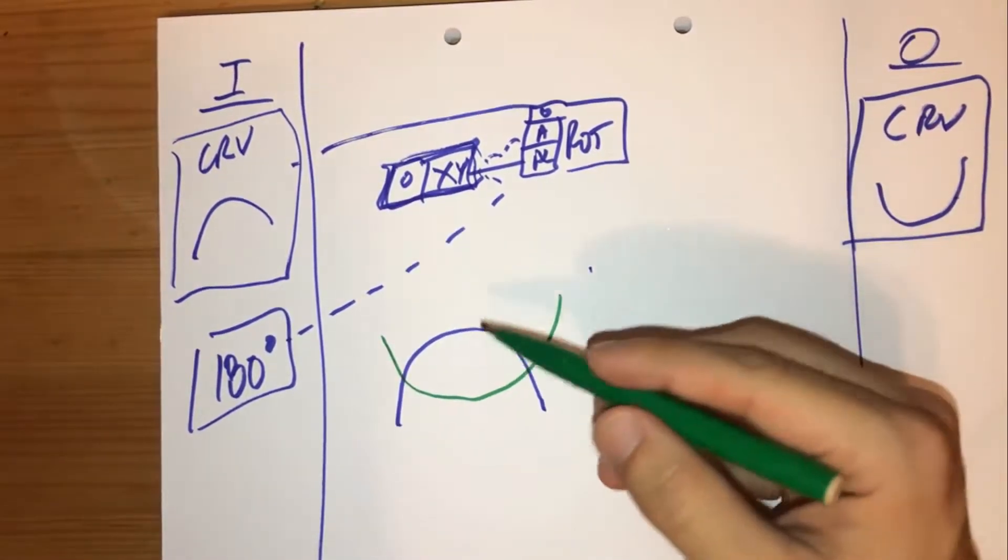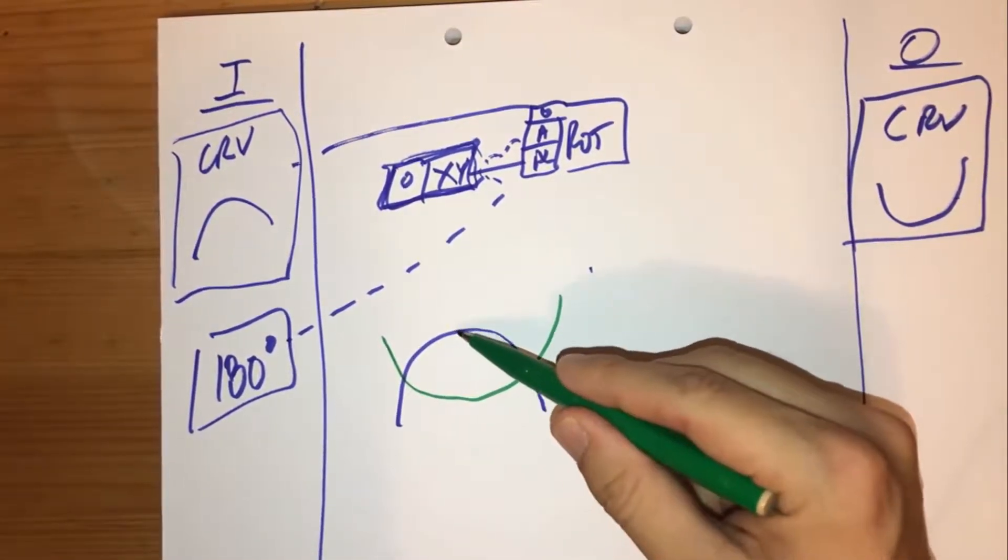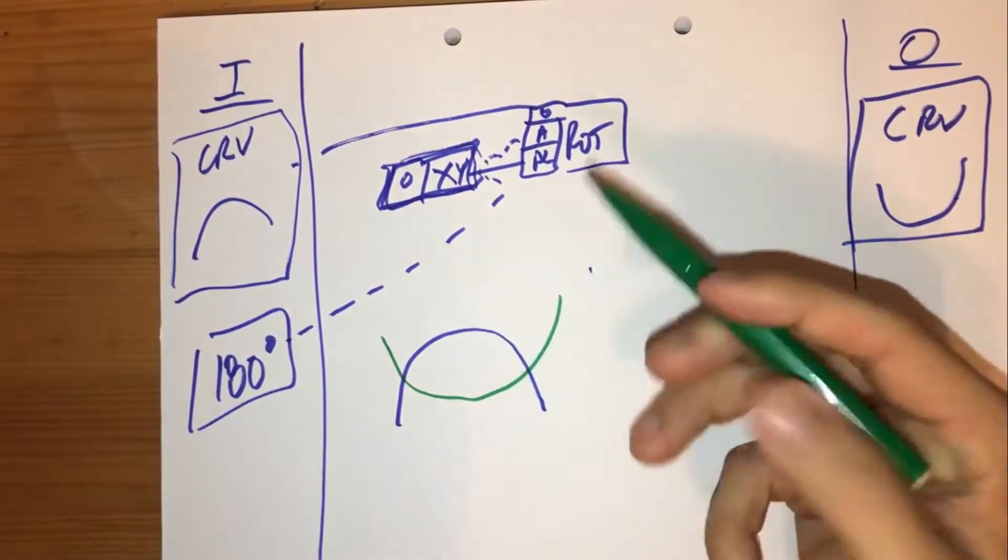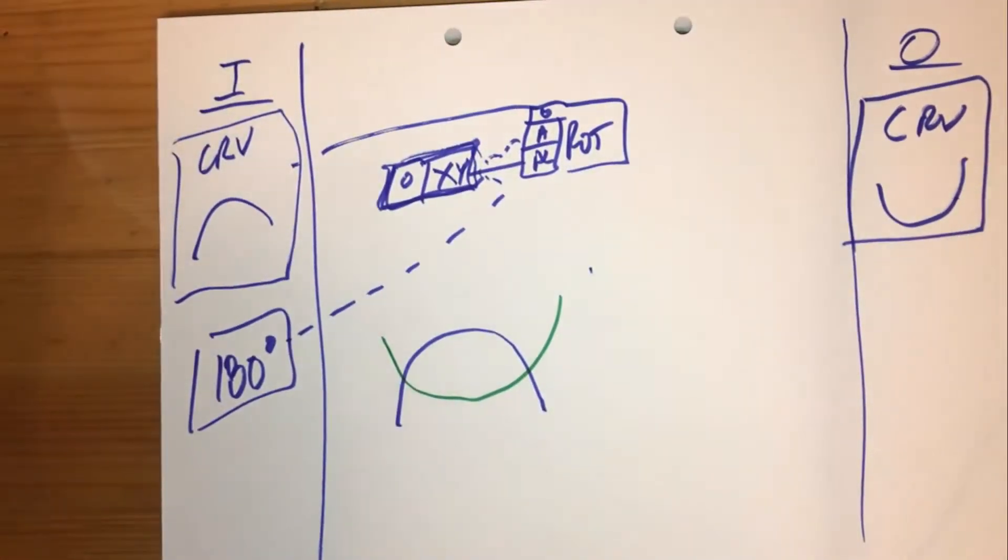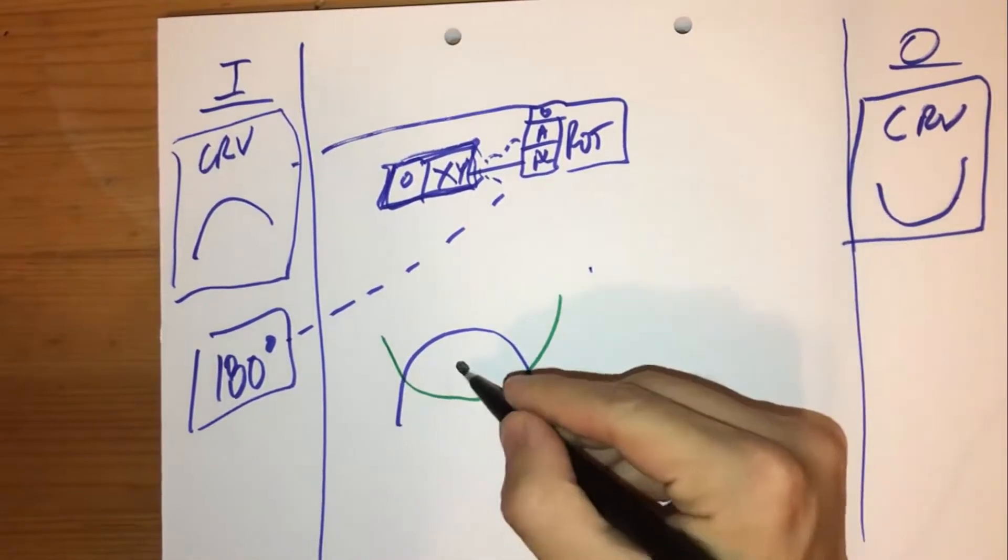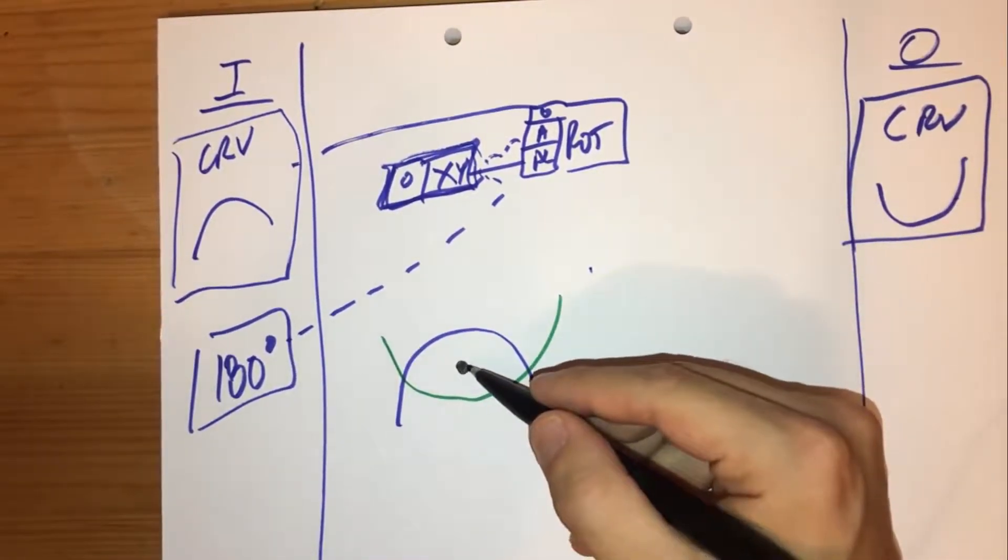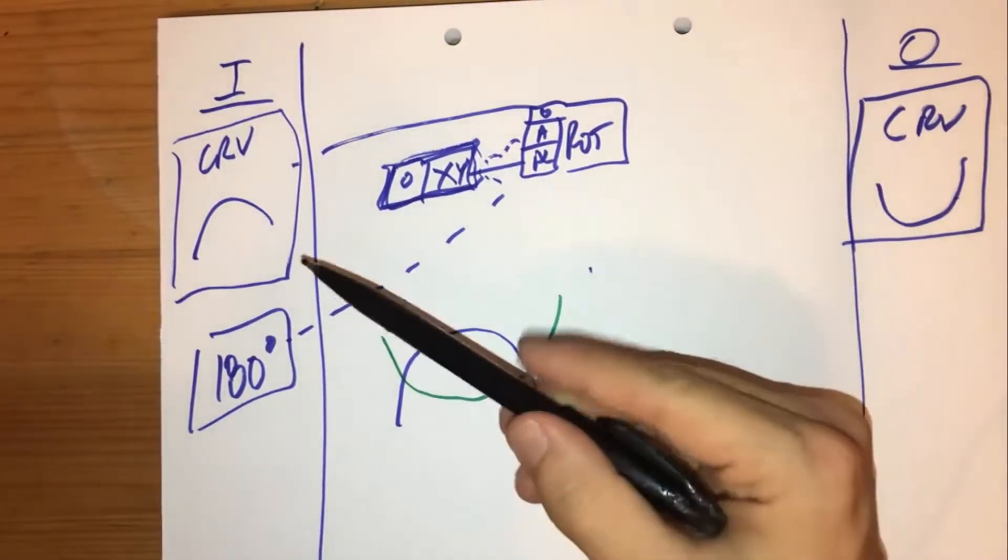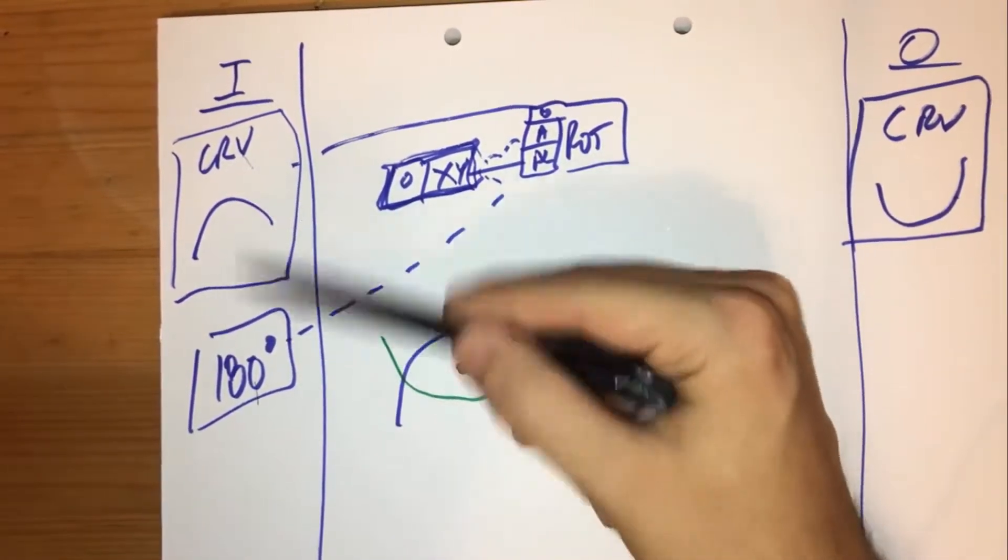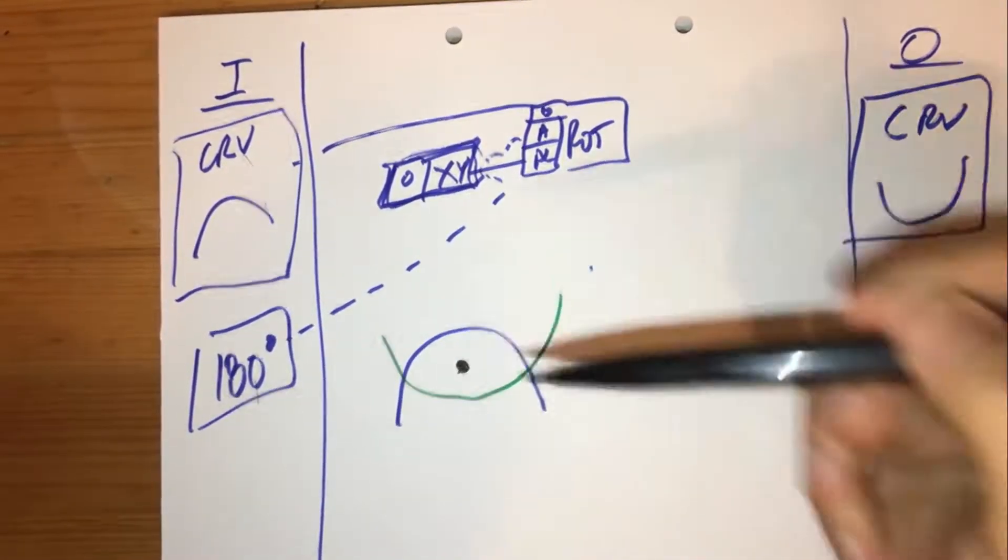What point have we rotated about to get from blue to green here? One would argue that's something right about here. But we don't have that point. So the real question is, how do I go from what I have to that point right there?